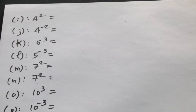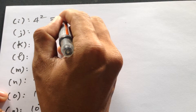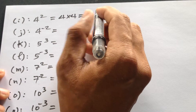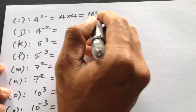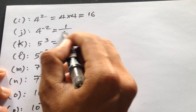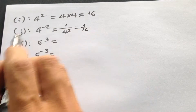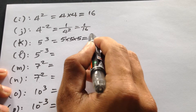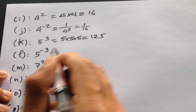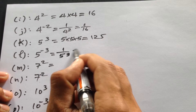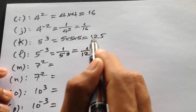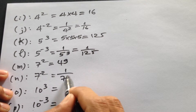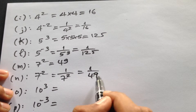4 divided by 2 — it will be 4 times 4, which is 16. Here is 1 over 4 squared equal to 1 over 16. And here 5 times 5 will be 125. Here is 1 over 5 divided by 1 divided by 49. Here is 100 squared equal to 1 divided by 49.